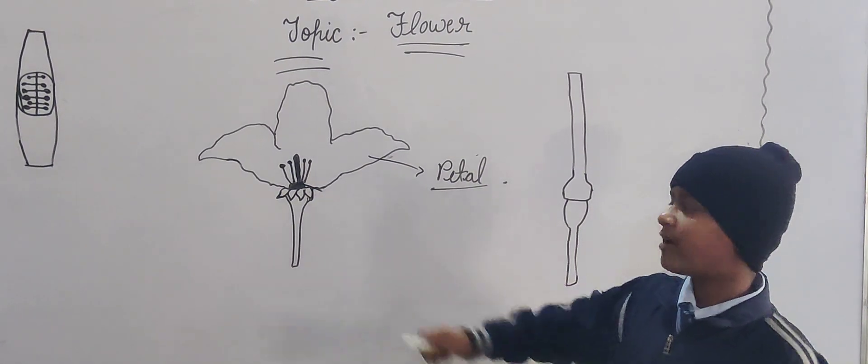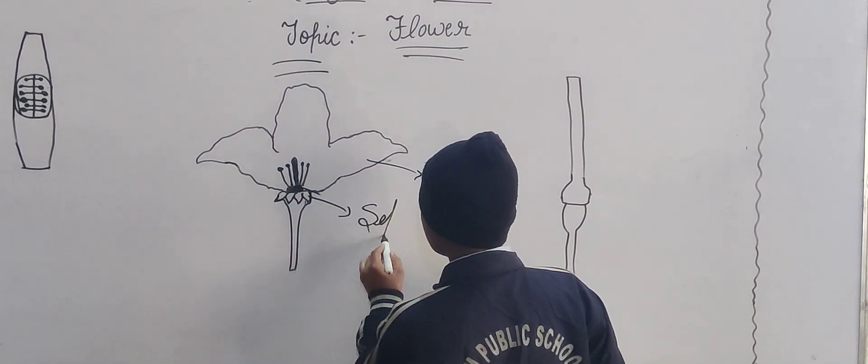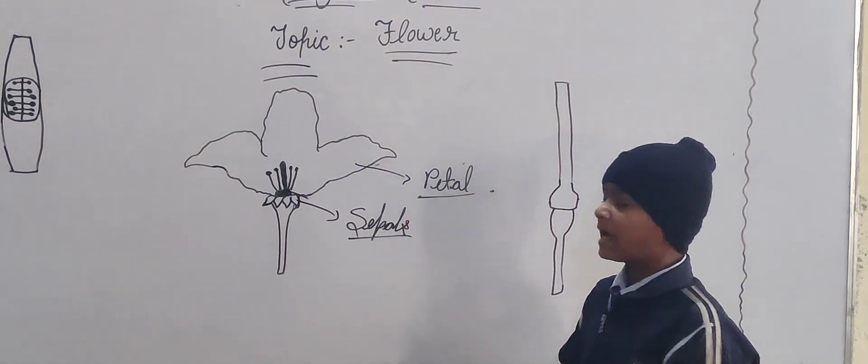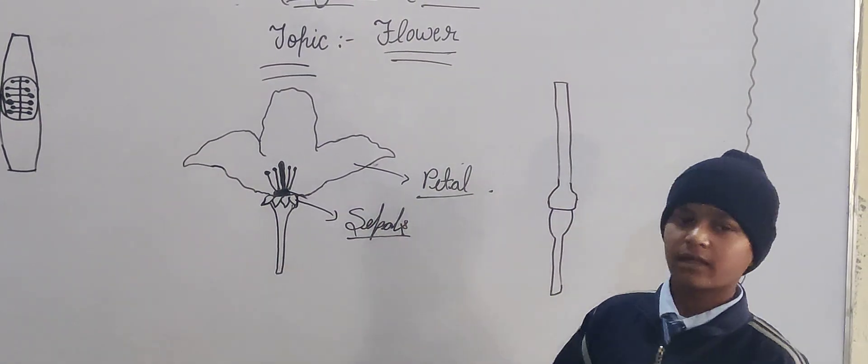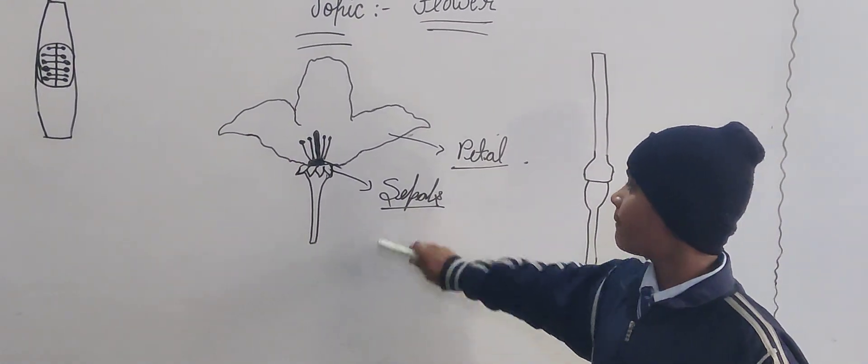Next part of the flower is sepals. The outermost fleshy structure of the flower are called sepals.